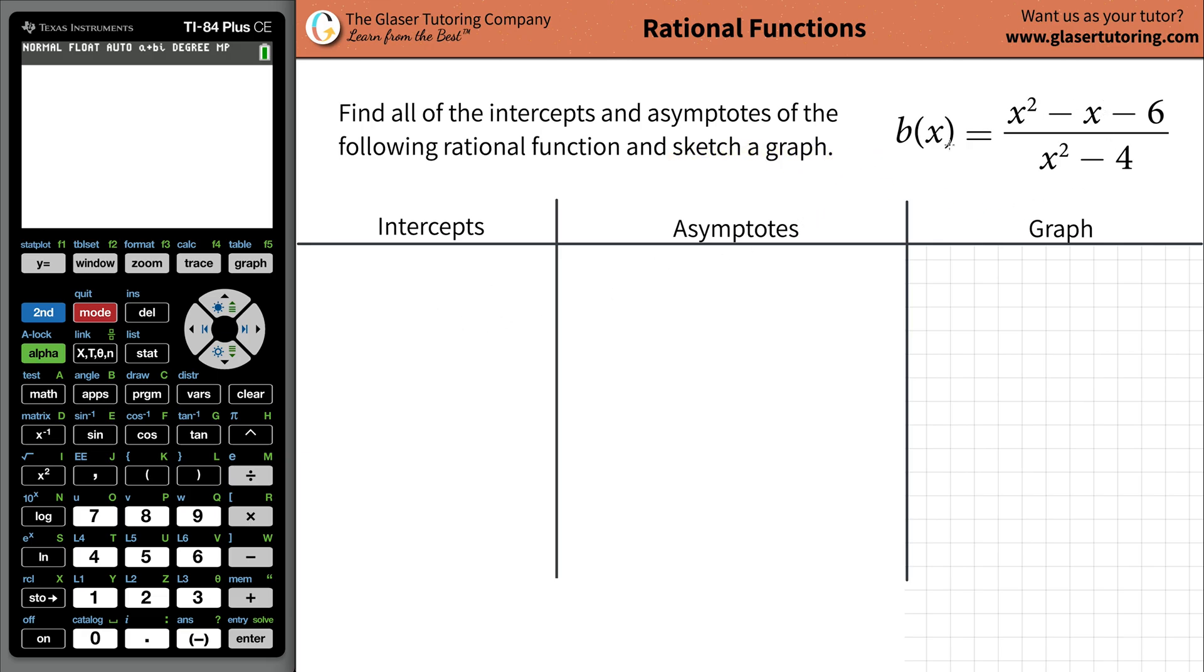So first thing is, what you want to do whenever you're finding intercepts, asymptotes, and all the stuff of a rational function, you want to make sure it's fully factored. If you already recognize that it's fully factored and nothing cancels, that's great. But what I want to do is I want to see if there's any hidden factors here that's going to cancel.